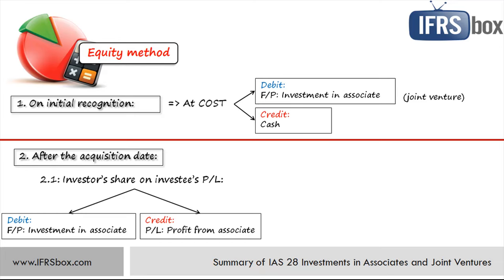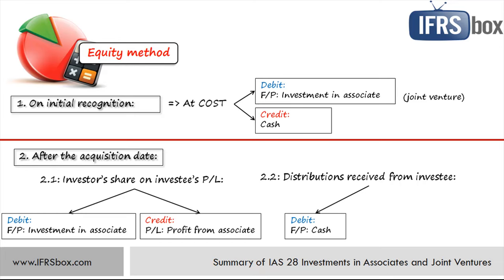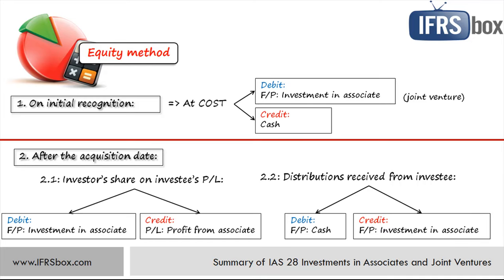When there are distributions from an associate or joint venture to the investor, such as dividends, the investor reduces the carrying amount of its investment by the amount received — debiting cash or bank account and crediting investment in associate. The equity method requires you to show your actual share of the investee's profit or losses, not only the share you receive as dividends. Dividends are credited to the investment rather than profit or loss to avoid double counting, since you have already credited profit or loss when recognizing the investor's share in the associate's profit, and dividends are part of that profit.